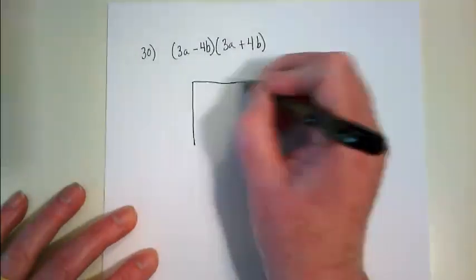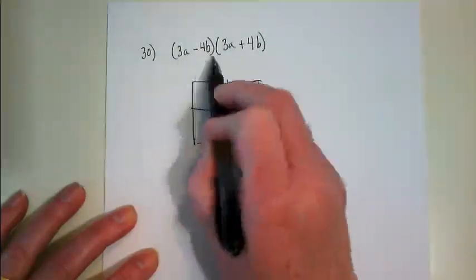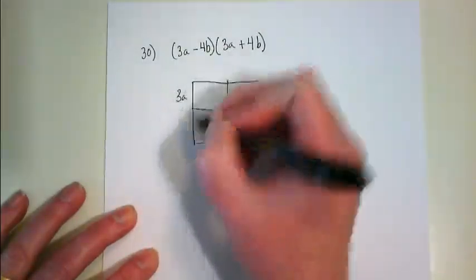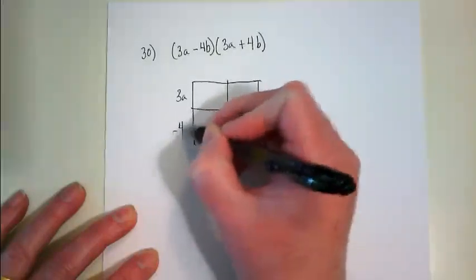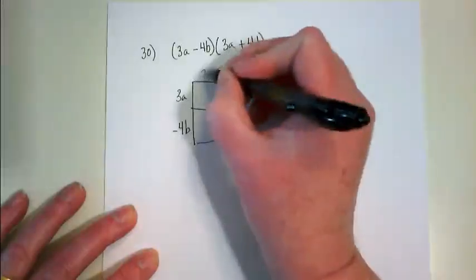So when we use the box method, we're clearly showing that this factor is being broken up into its two parts on this side of our box, and this factor is being broken up into its two parts up here.